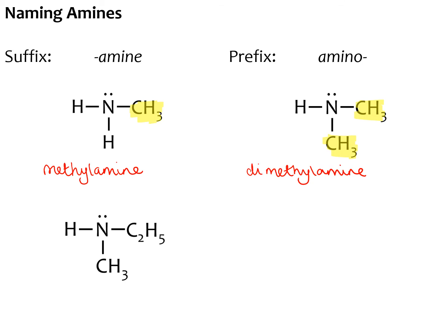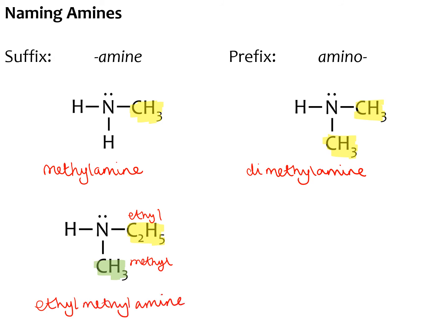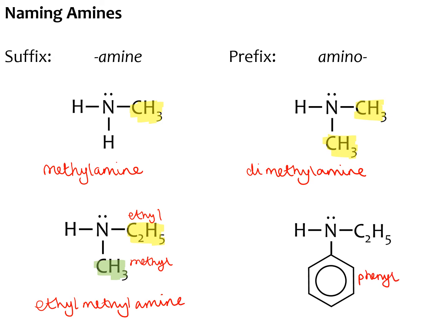The next example is where we have two different side chains: an ethyl group and a methyl group. As with all IUPAC nomenclature, we use alphabetical order, so this would be called ethylmethylamine. Our next example is where we have a benzene ring as a side chain — this is a phenyl group, which is what we call benzene when it is used as a side chain. We also have an ethyl group here, and naming in alphabetical order, this would be ethylphenylamine.